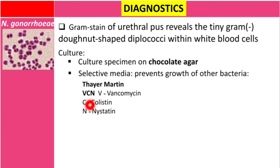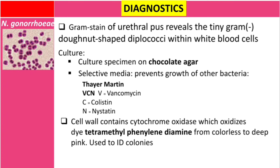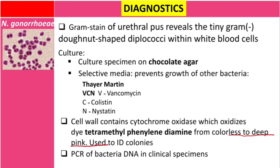VCN stands for: V — vancomycin, which kills Gram-positive bacteria; C — colistin, which kills Gram-negative bacteria except Neisseria species; and N — nystatin, which kills fungi in the culture. The cell also condenses cytochrome oxidase, which oxidizes the dye tetramethyl-p-phenylenediamine from colorless to deep pink — this is the oxidase test used to identify the colonies. We can also use PCR of bacterial DNA in clinical specimens.